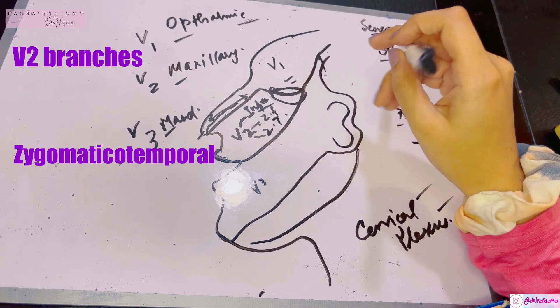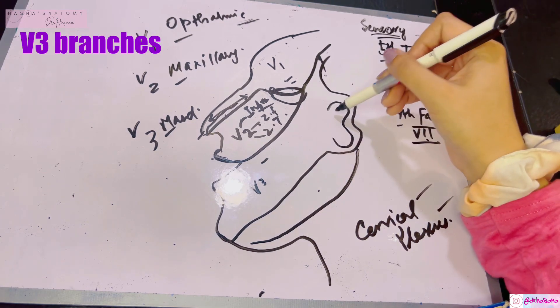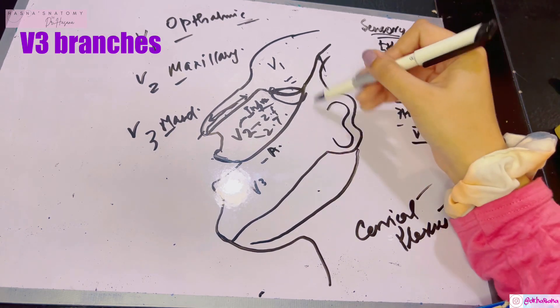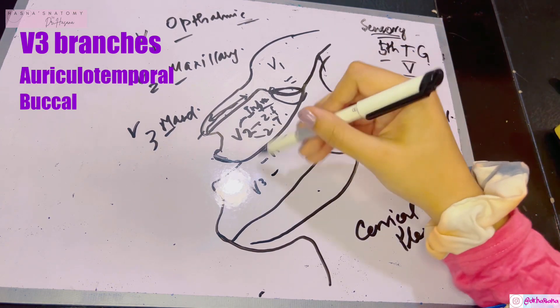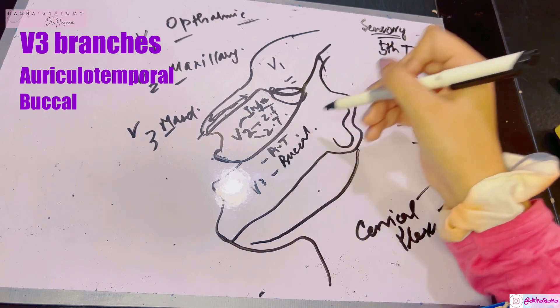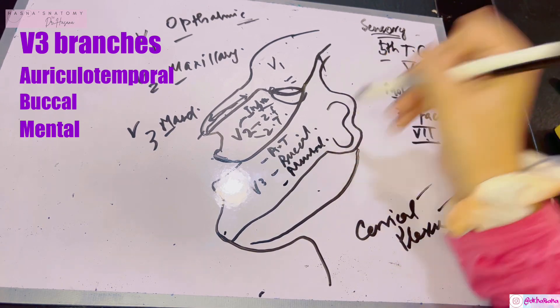Three branches of V3 are: since the auricle is involved, the auriculotemporal nerve, then you have the buccal nerve because this is the area of chewing, and finally the chin area, so the mental nerve.